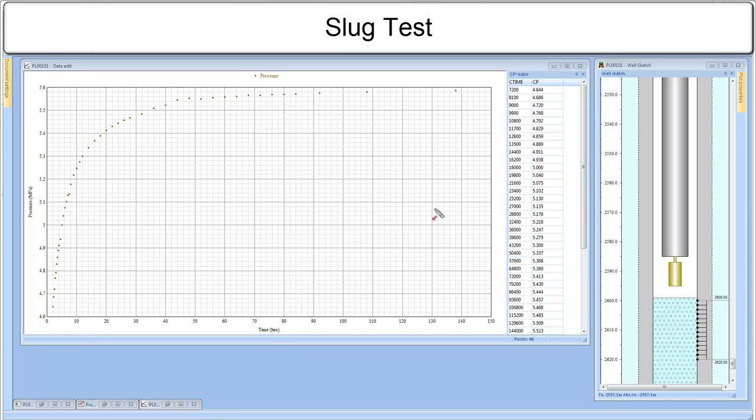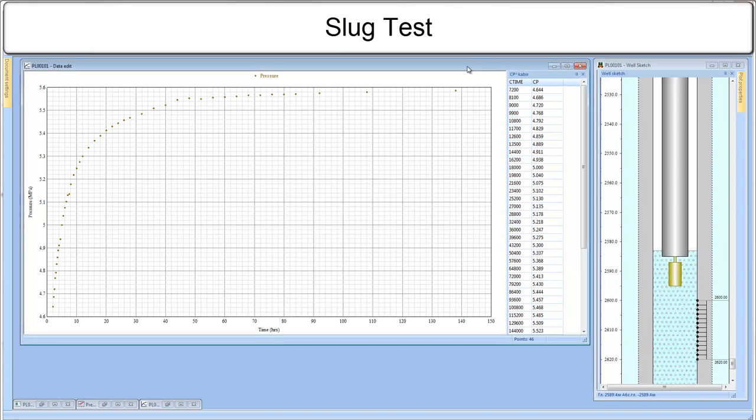The main idea of slug test is to create an instantaneous drop of pressure in the wellbore by either adding or removing a small amount of liquid from the wellbore. The pressure is measured by pressure gauge or calculated from wellbore fluid level. In case of inflow, the wellbore fills with fluid, thus increasing pressure, slows down and stabilizes near initial pressure, PI.